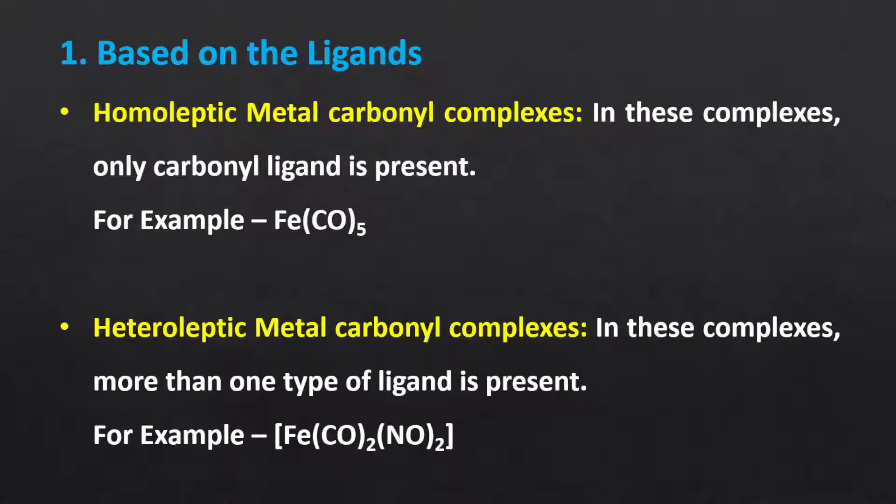The second type is heteroleptic metal carbonyl complexes. In these complexes, more than one type of ligand is present. That is, besides the carbonyl ligand, other types of ligands are also bonded to the central metal. For example, dicarbonyl dinitrosyl iron complexes.